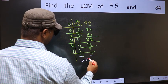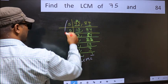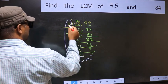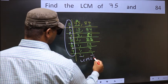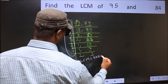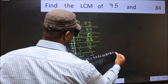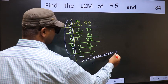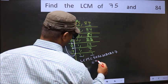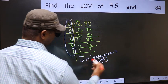So our LCM is the product of these numbers. That is 5 into 5 into 5 into 3 into 2 into 2 into 7. When we multiply these numbers, we get 2100 as our LCM.